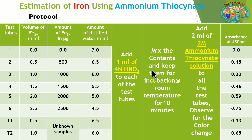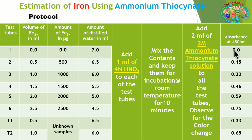After incubation, add 2 ml of 2 molar ammonium thiocyanate solution to all test tubes and observe for the color change. A red complex color forms, and its intensity corresponds to the concentration of ferric ions present in the solution. We then measure the absorbance (OD) at 480 nanometers. The readings obtained are: 0.010, 0.15, 0.30, 0.46, 0.59, 0.75, 0.33, and 0.68.